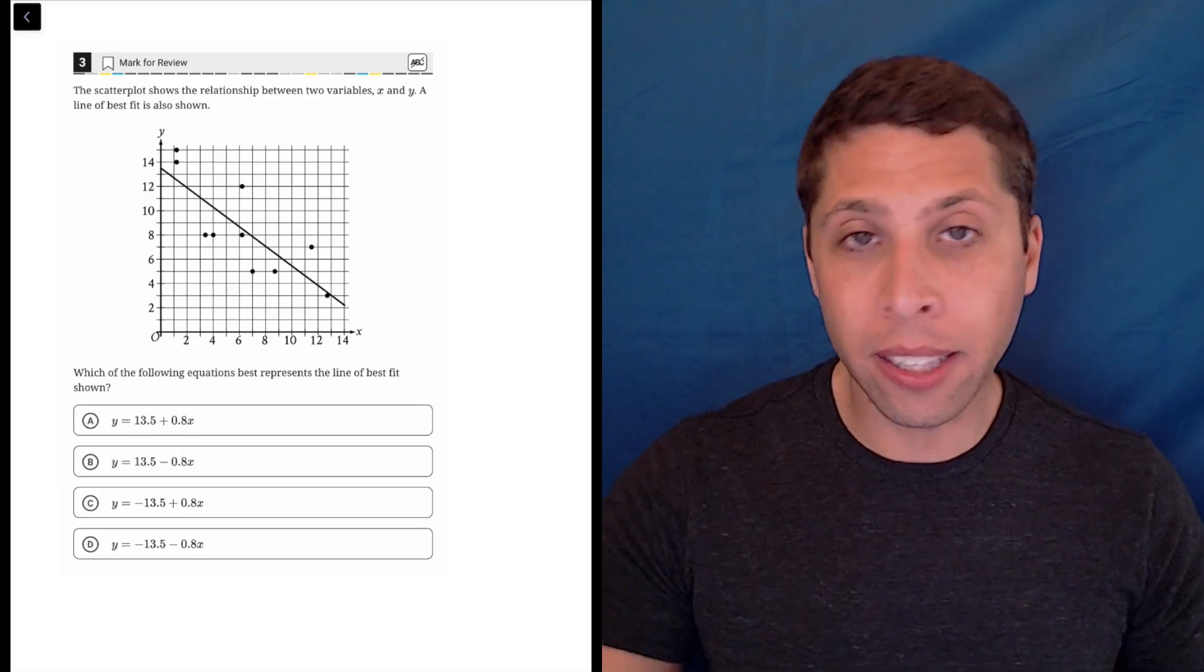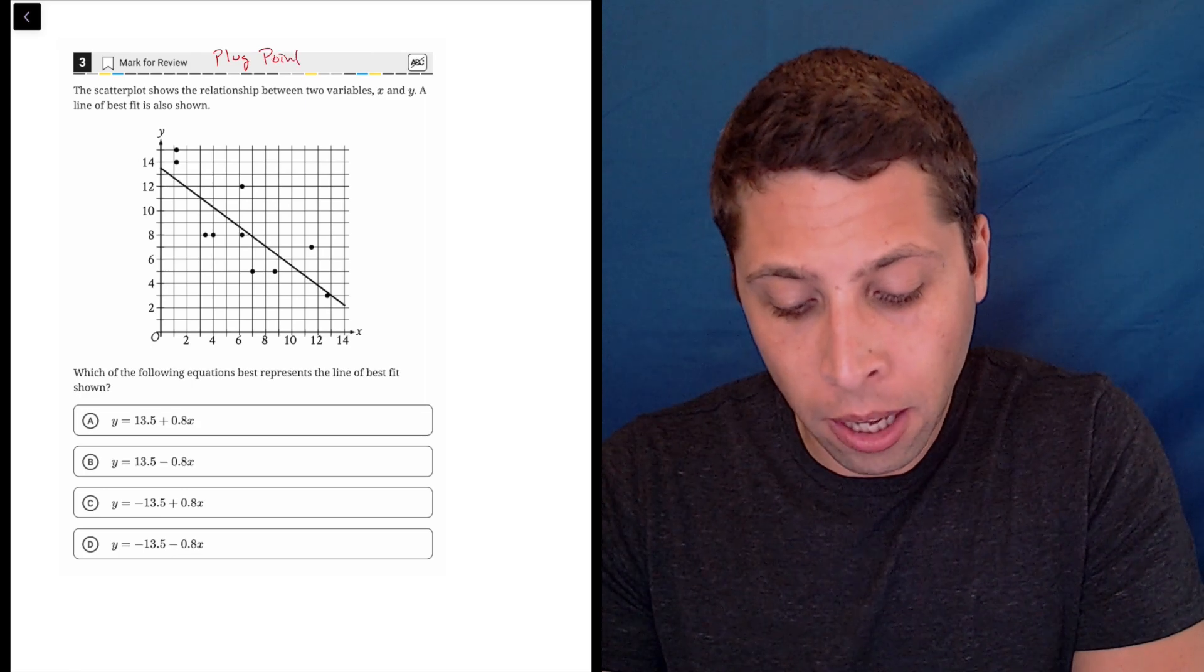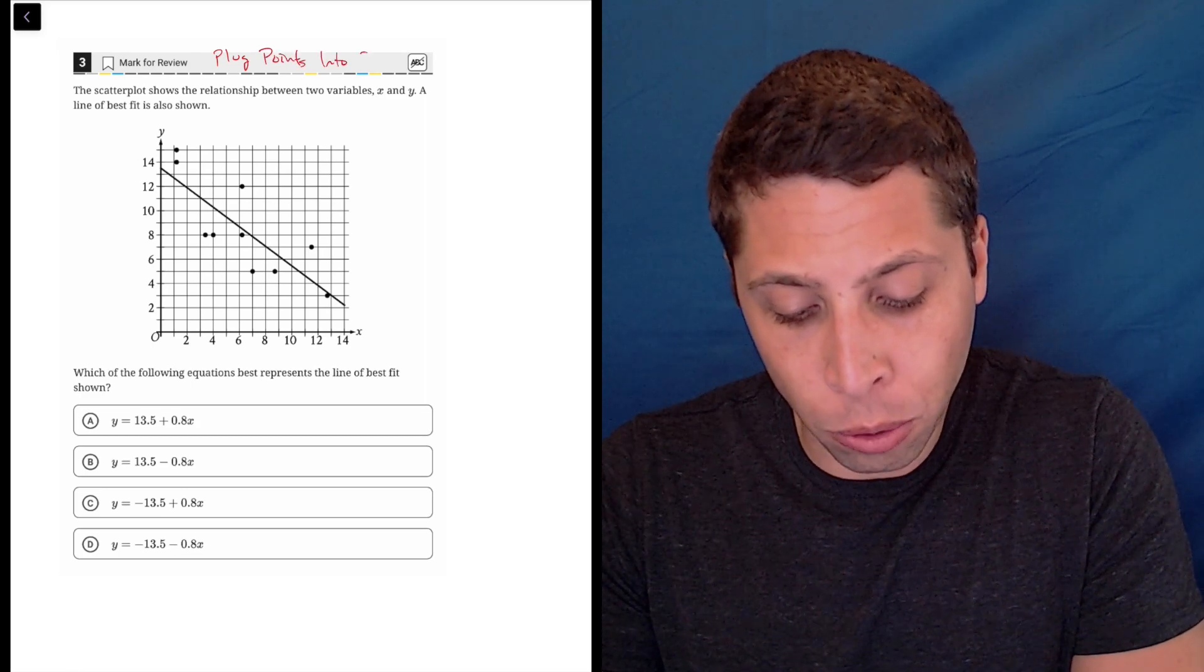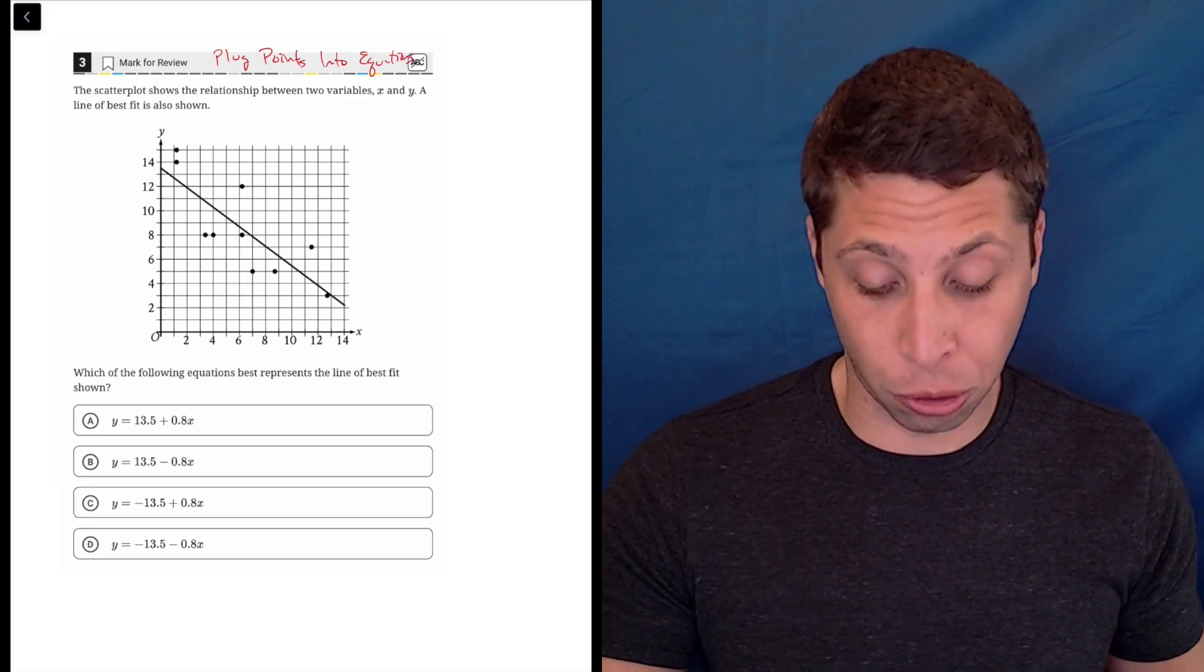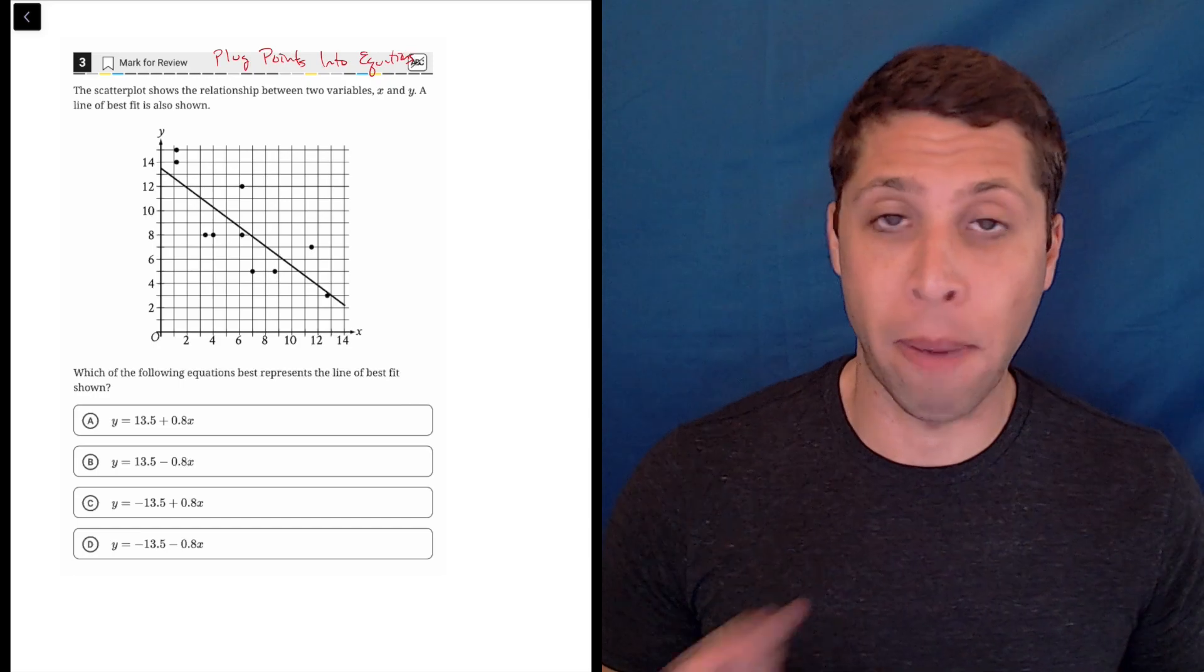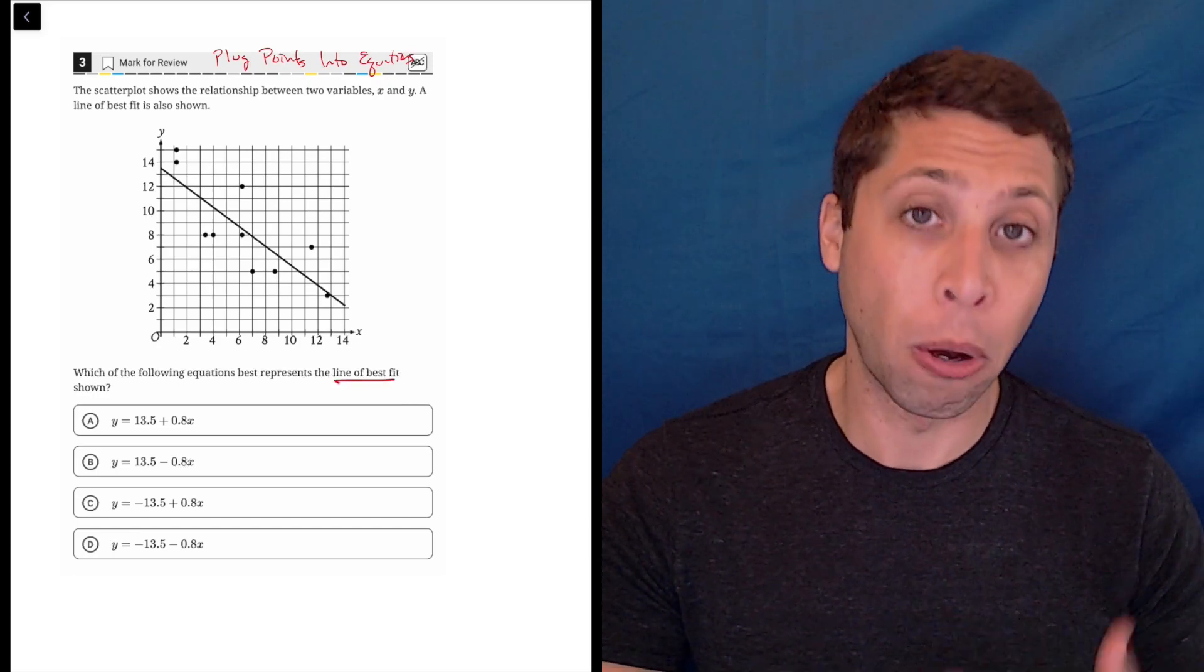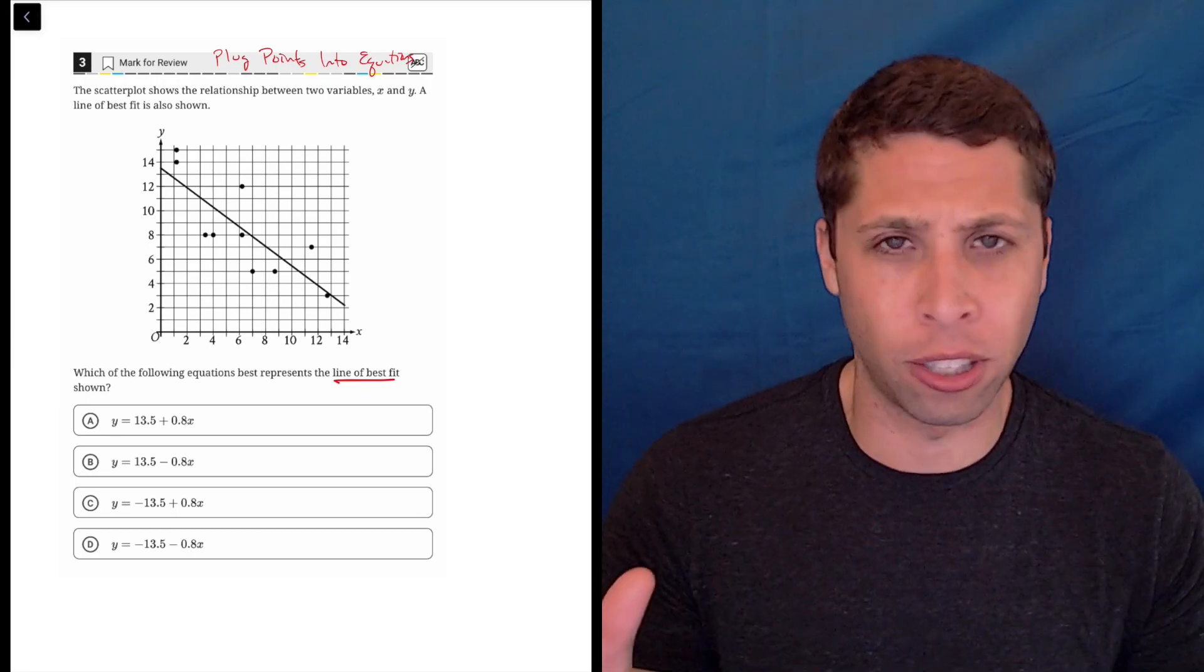Now, first of all, this is a question that I immediately recognize as one for my strategy plug points into equations, because they're clearly giving us a bunch of equations in the answer choices. And yes, there are dots on this graph, and those might seem like the points that matter, but they're not, because all of the equations are supposed to be the line of best fit. So it's actually just the line that I care about. The dots are just a distraction.